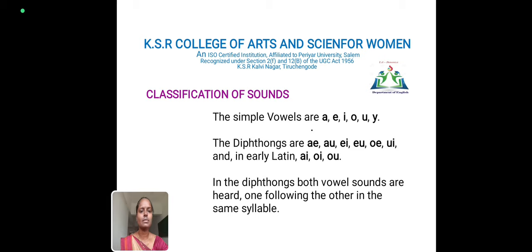Something called diphthongs: A-E, A-E, O-E. And in early Latin: A-E, O-E, O. These sounds are diphthongs. In diphthongs, both vowel sounds are heard, one following the other in the same syllable.